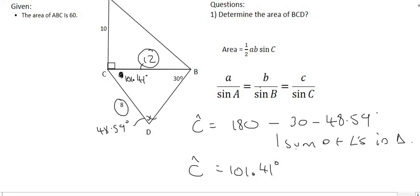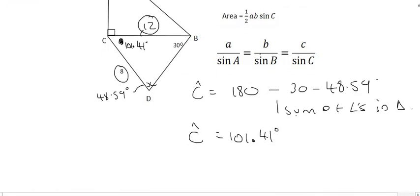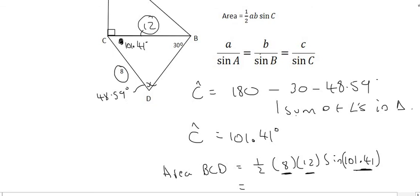Eventually we can use the area rule for BCD. We can say that the area of BCD is equal to a half times by 8 times by 12 times by the sin of 101.41. Remember, it's the two sides and the angle in between those two sides that you need to use. And so if you do all of that on the calculator, you're going to end up with a final answer for that area as 47.05.